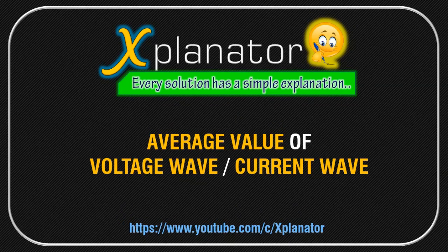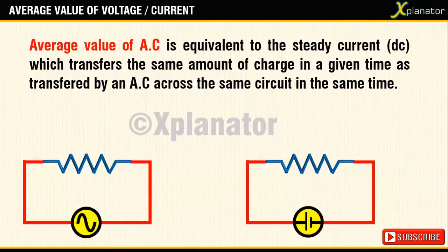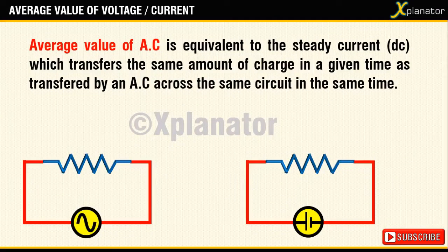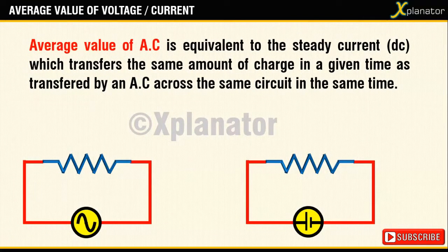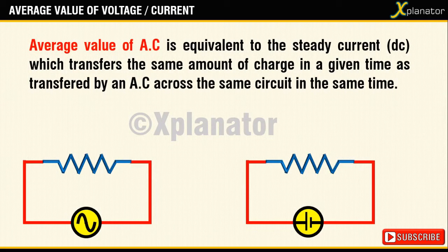The definition of average value says, average value of AC is equivalent to the steady current which transfers the same amount of charge in a given time as transferred by an AC across the same circuit in the same time.